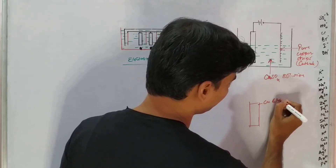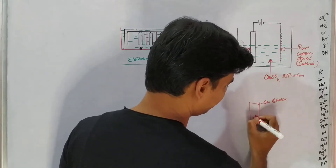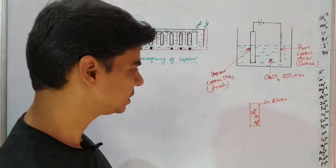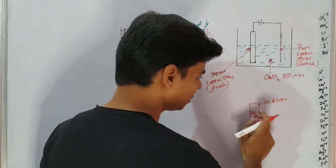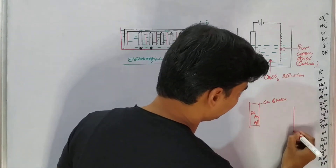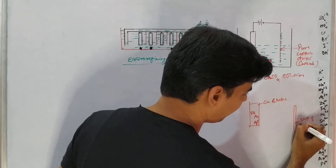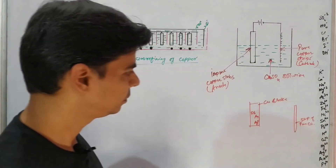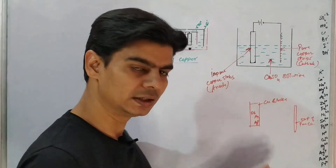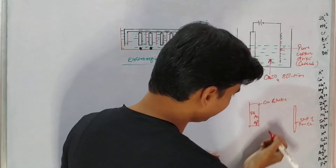This copper block contains impurities like silver, gold, and lead. At the cathode, we have a thin strip of pure copper. What can happen is: if this copper can be made to ionize and enter the electrolyte in the form of copper ions, then the entire copper slab will slowly ionize and enter the electrolyte as copper ions.